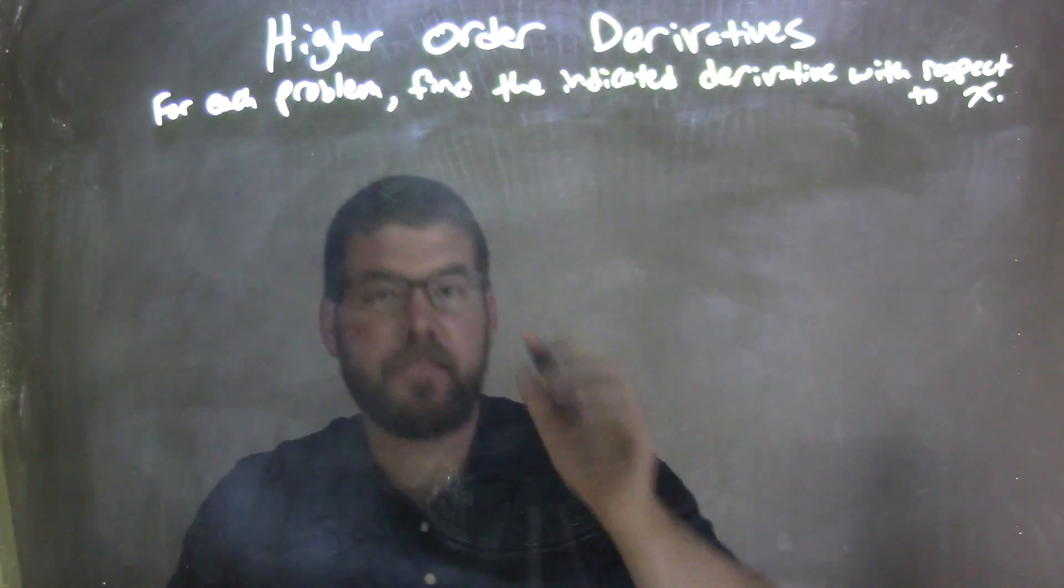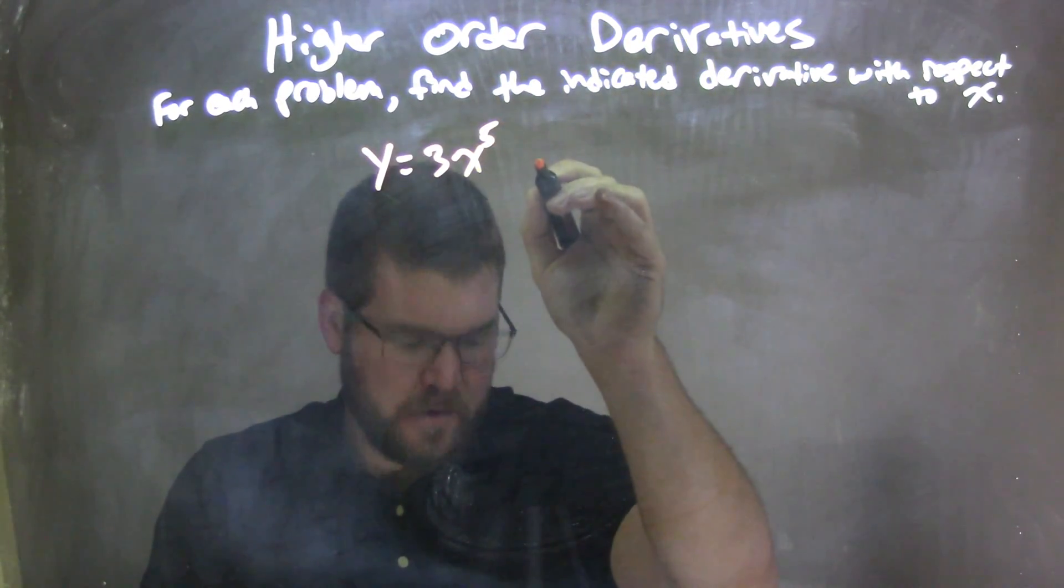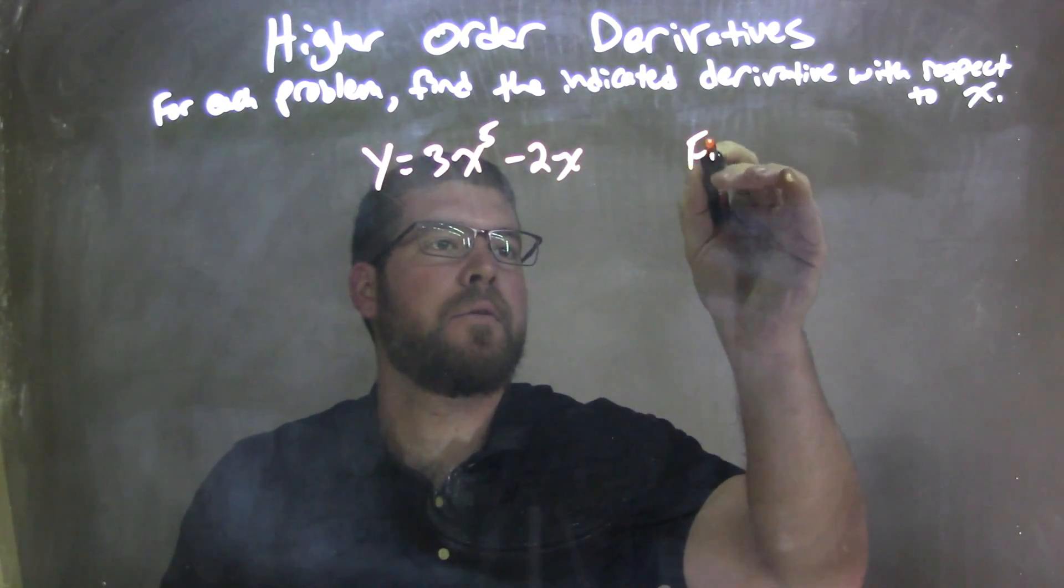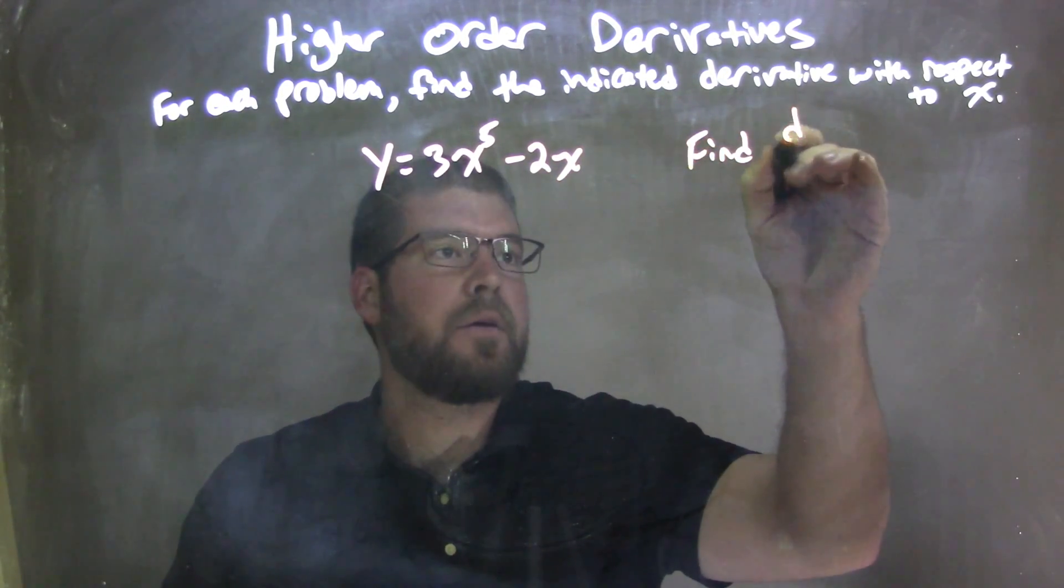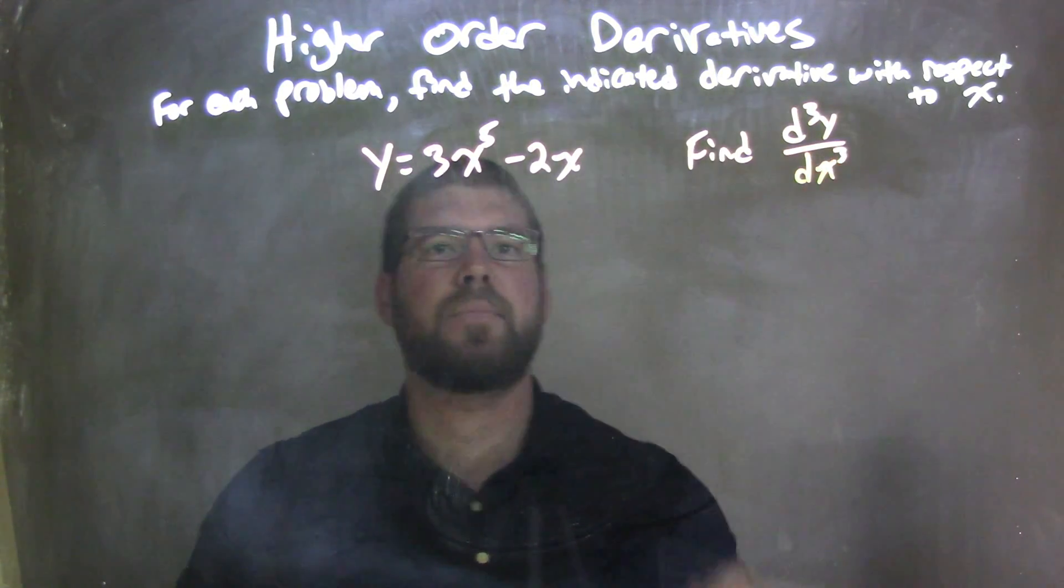So if I was given this problem, y equals 3x to the fifth power minus 2x. Now, we want to find the third derivative, d to the third power of y over dx to the third.